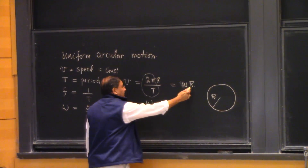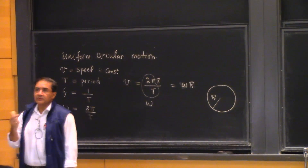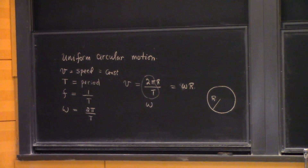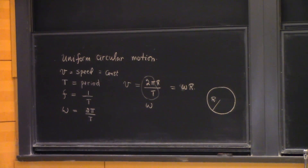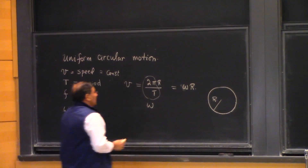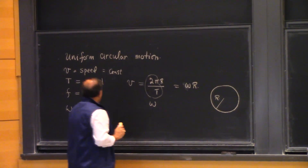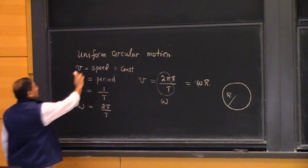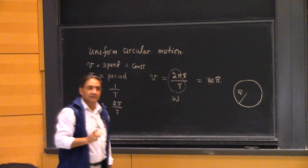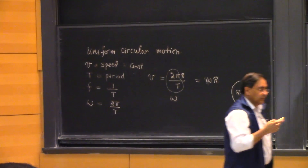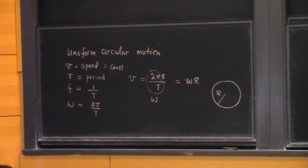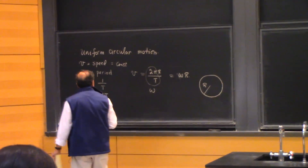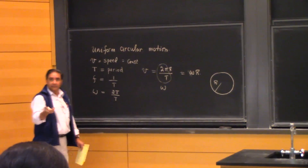V equals ωR, so if R goes to zero, V would be zero — at the center of circular motion there is no speed. ω is regarded as constant for uniform circular motion. Later, when we get into rotational dynamics, we will relax that condition, just as we relax the condition of constant acceleration.